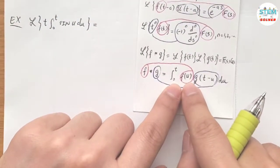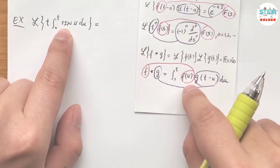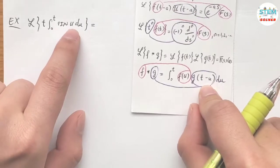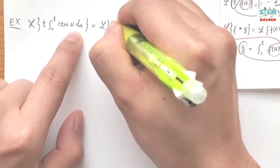But in this case, we only have the function in terms of u, and we're missing the function in terms of t minus u. But actually, we do have it, but it is hidden, so let me pull it out for you so that you can see it.